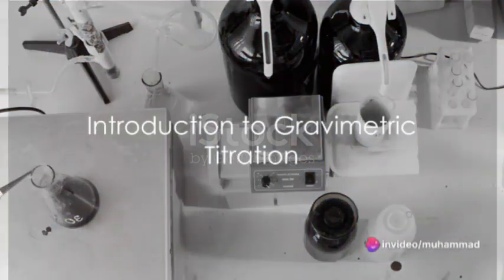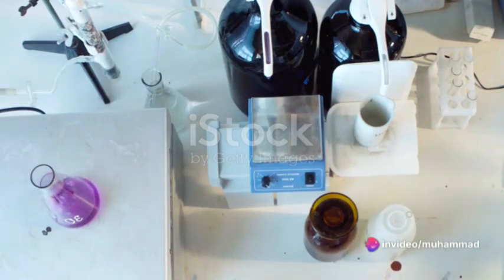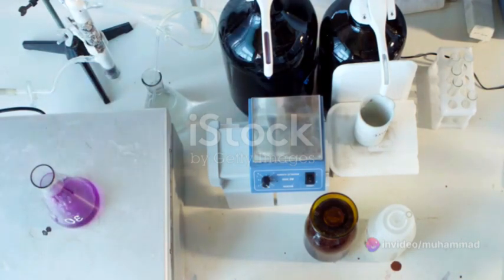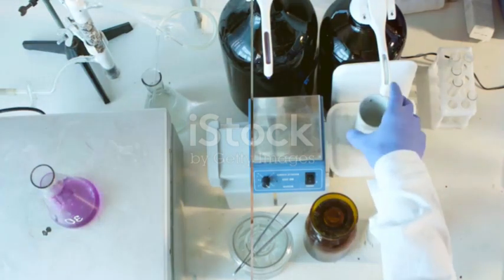Ever wondered how scientists accurately determine the concentration of a particular element in a sample? Well, they often use a process called gravimetric titration, an intriguing blend of chemistry and precision.